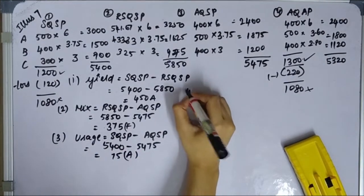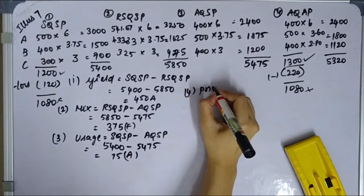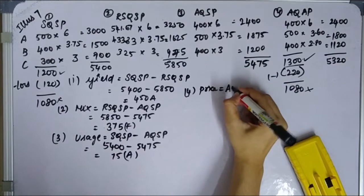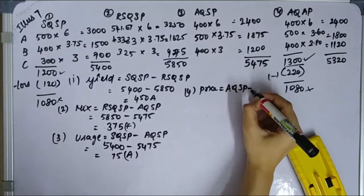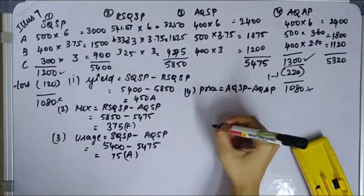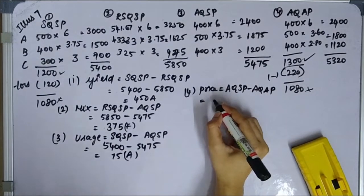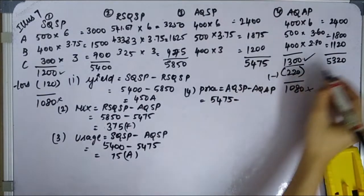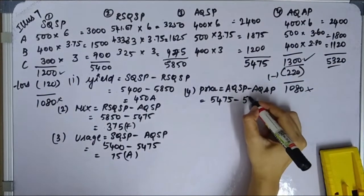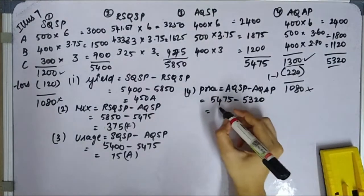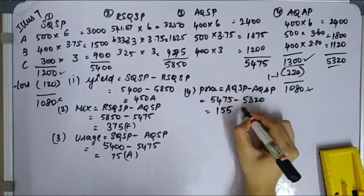And fourth one is Price Variance. Price Variance is AQ SP minus AQ AP. AQ SP is 5,475 minus AQ AP is 5,320. Favorable. How much? 155 as favorable.